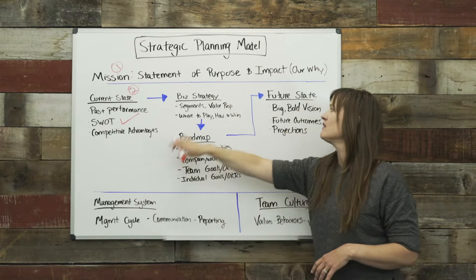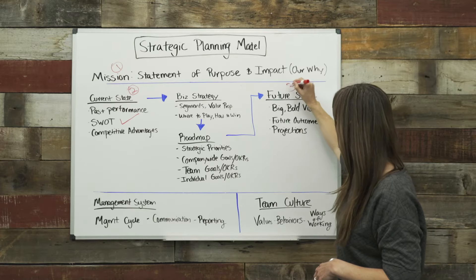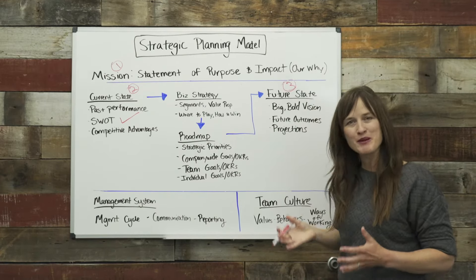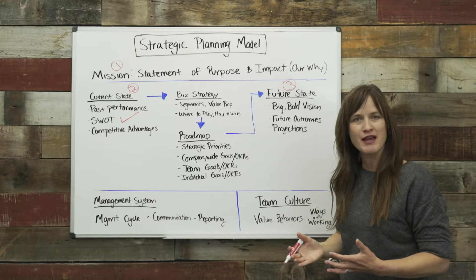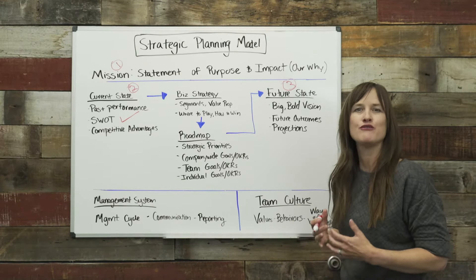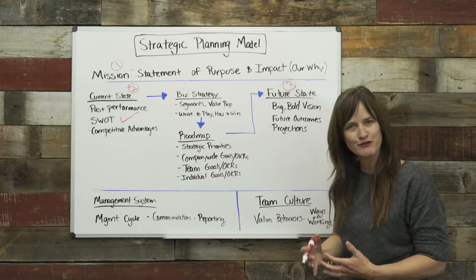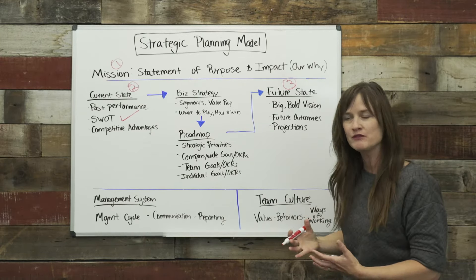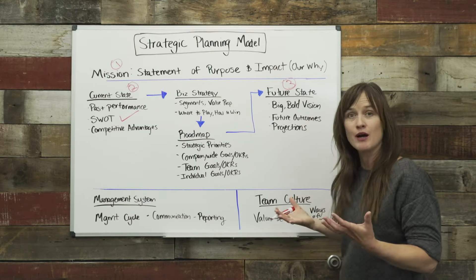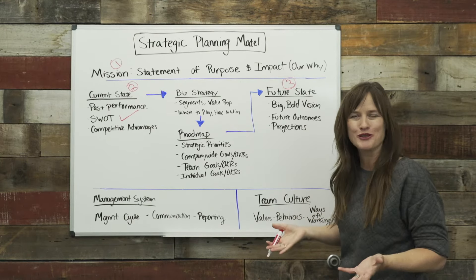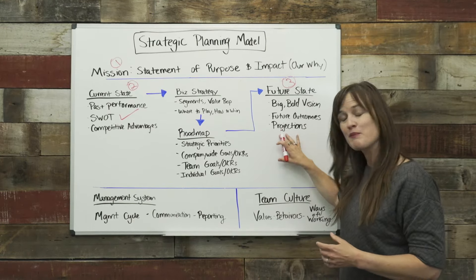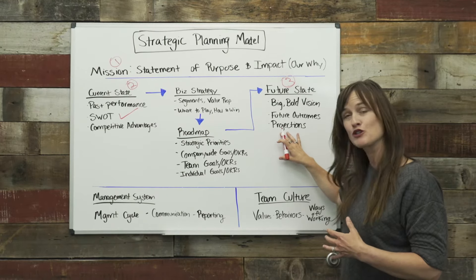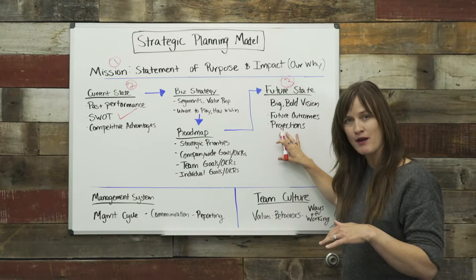From there, moving over and deciding where you want to go — your future state. A strategic plan is only necessary if there's a future you want to create that's different than today. What's that future? Articulate it in a big, bold vision. Future outcomes — what does the future look like. And projections — financial projections, what does the financial picture look like from a top line and a bottom line perspective.